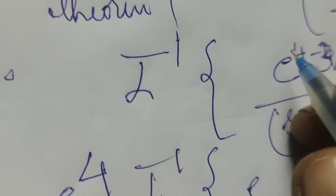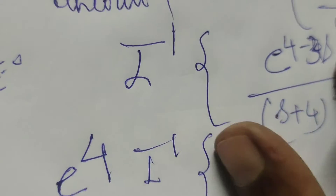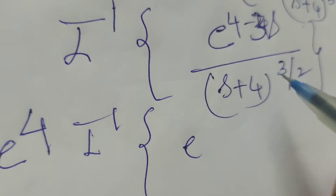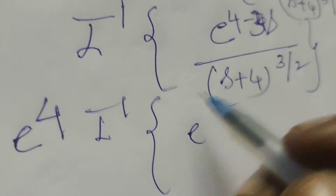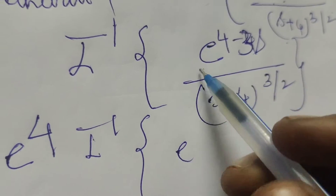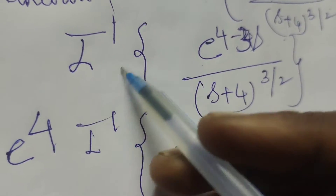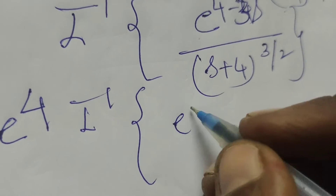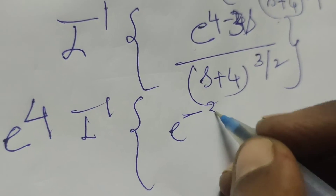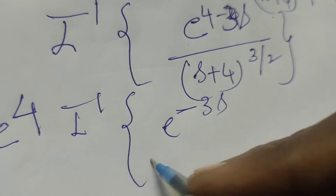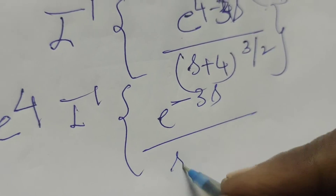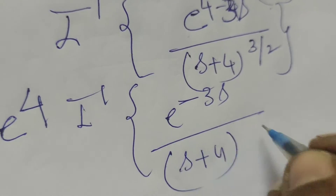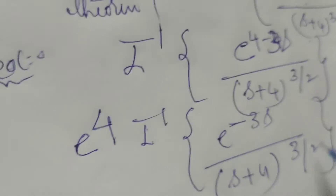Here, first of all, write the given inverse Laplace transform of the function. That is e^4 into the inverse Laplace transform of e^(-3s) / (s+4)^(3/2).